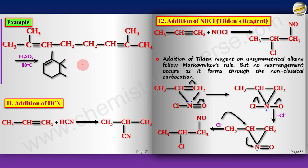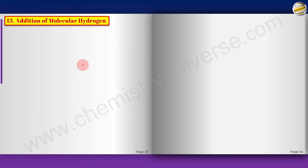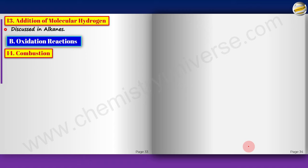Addition of molecular hydrogen has already been discussed in alkanes. Now come oxidation reactions. First is the combustion reaction — for any hydrocarbon it gives CO2 and water. The balanced equation is as expected.